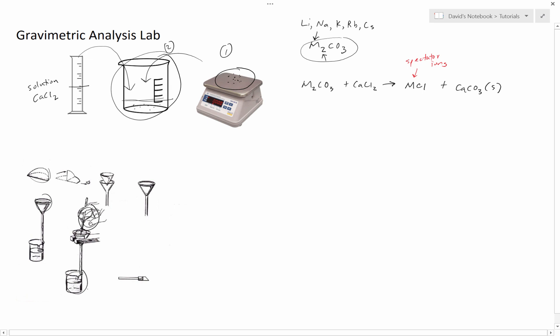What's actually filtering out is our spectator ions. This is going to be M and Cl minus. So actually, our unknown metal ends up in here. But I'll tell you why that's actually not important.